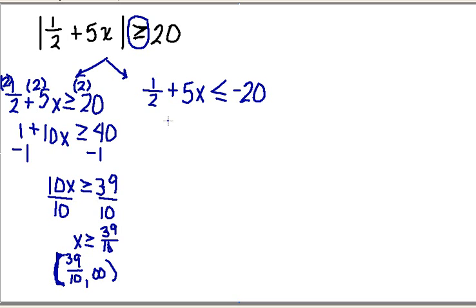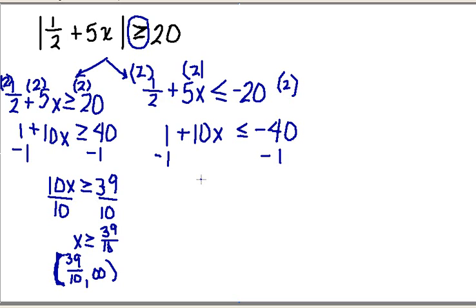Now we solve the second inequality. Again, I'll clear the fraction by multiplying every term by 2, so I get 1 + 10x ≤ -40. Once it's set up like this, it's easy to solve. Subtract 1 from both sides to get 10x ≤ -41. Divide both sides by 10, and I get x ≤ -41/10.